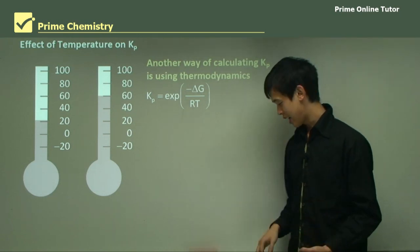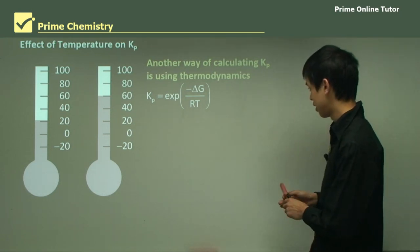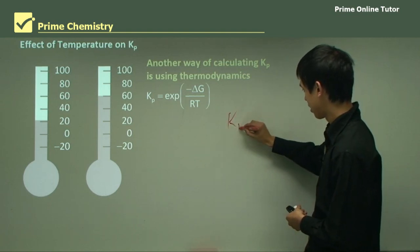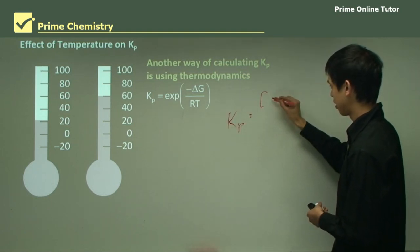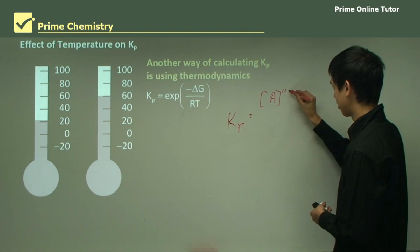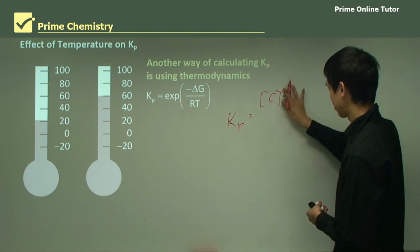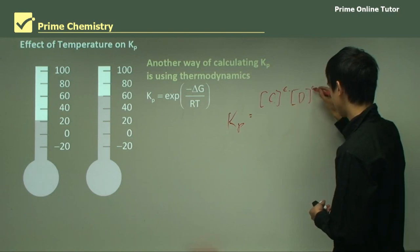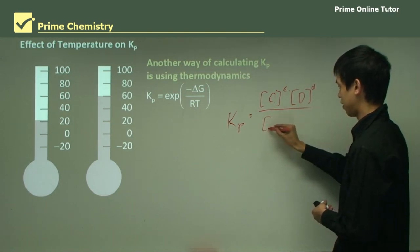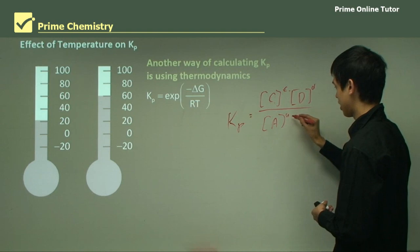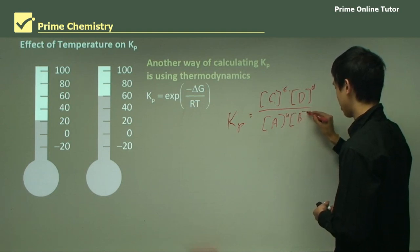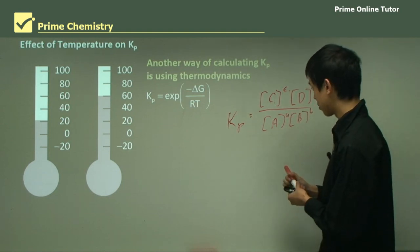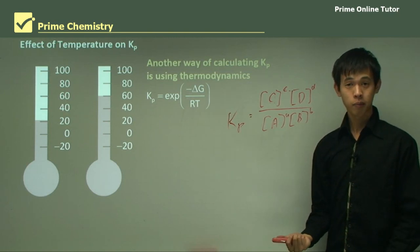So remembering that Kp was just, Kp was equal to C to the C times D to the D over A to the A times B to the B. So that was our way of calculating Kp, right? From chemistry.